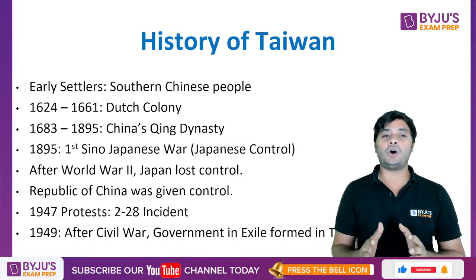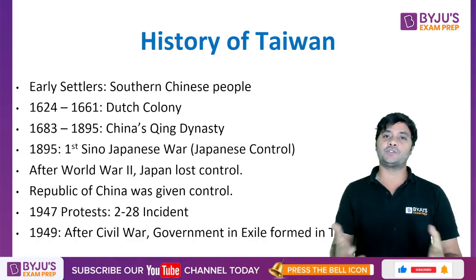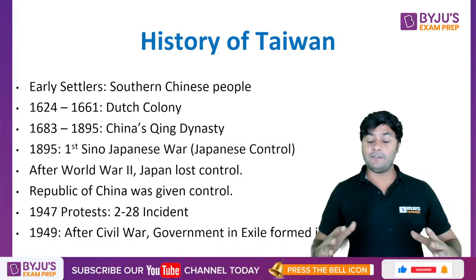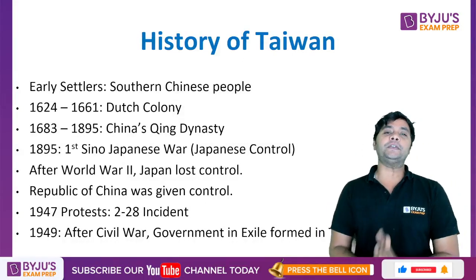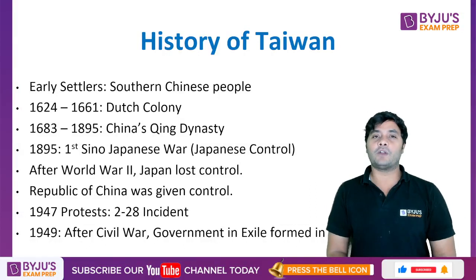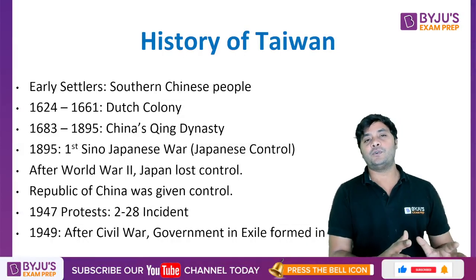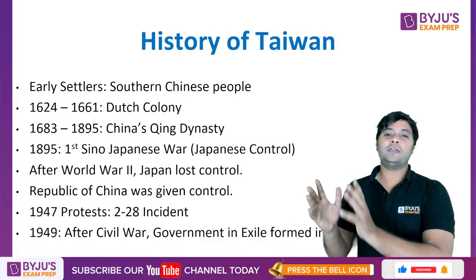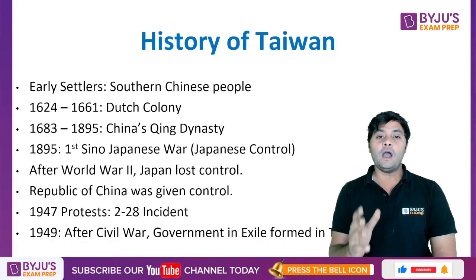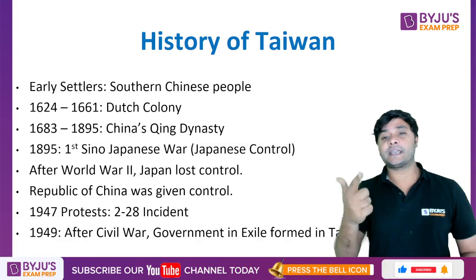The First Sino-Japanese War happened in 1895, and Japan was victorious, taking complete control of the Taiwan region. Taiwan then belonged to Japan for a long period. After World War II, when Japan lost to the Allied Forces, Taiwan was given back to China, and China regained control over the region.